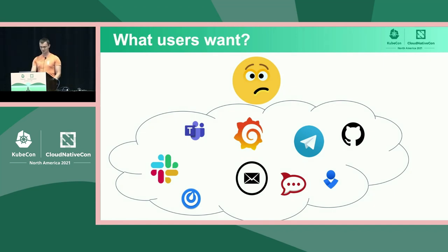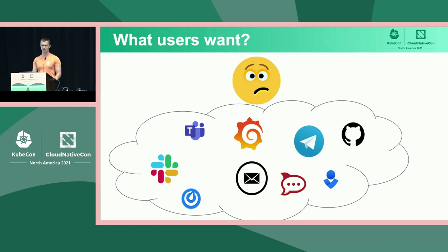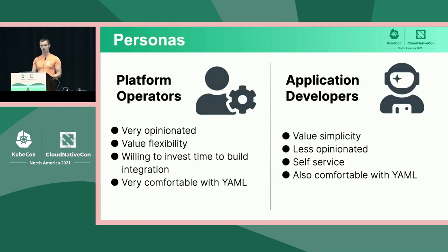Every user has an opinion about when notifications should be sent. Some want to be notified about everything; some only want to know about important events — and 'important' means something different for everyone. Absolutely everyone wants to be able to customize the notification text. At best we can cover the most common use cases, but it would take forever to iterate and codify all of them.